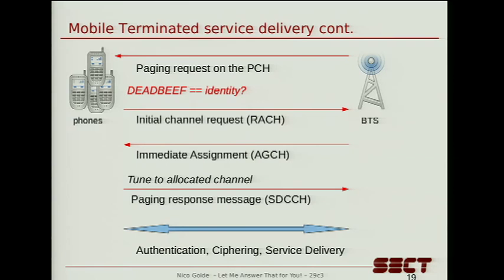At this point the phone doesn't ring yet, because it doesn't know if this is an SMS message or a call. The network wants to authenticate the subscriber first, because it doesn't want to deliver a service to any phone in the area — though this isn't always done in practice, more on that later. Most networks these days encrypt all the messaging, and then there's a ciphering step. Afterwards the service is actually delivered — the phone knows it can ring because it's a call, or it just accepts the SMS message.